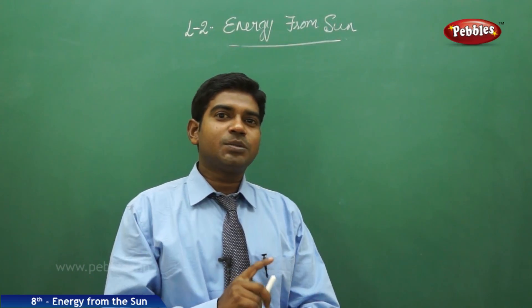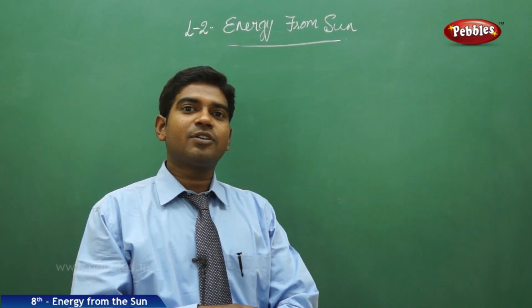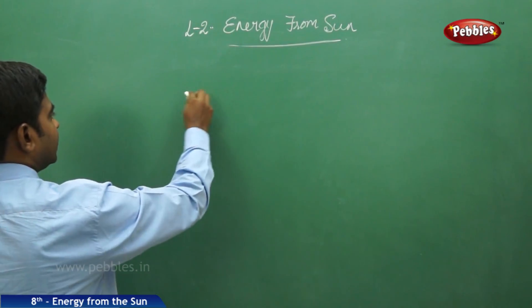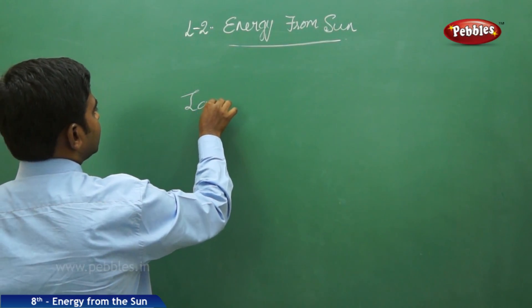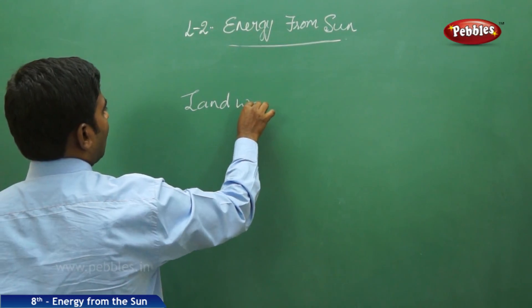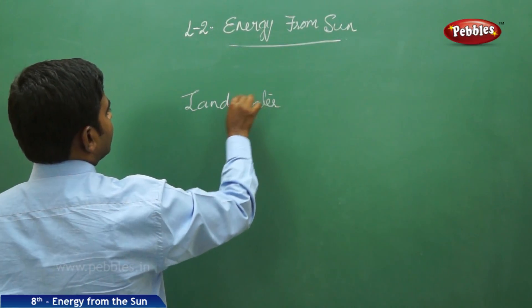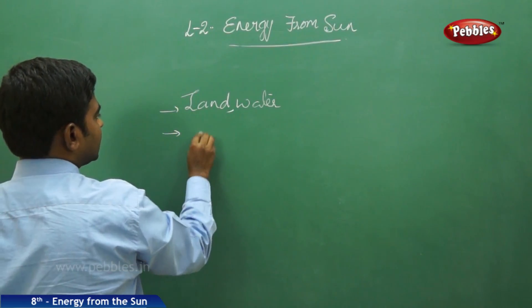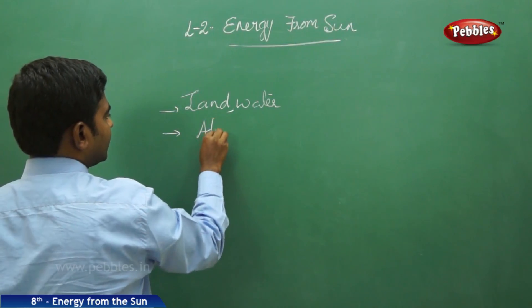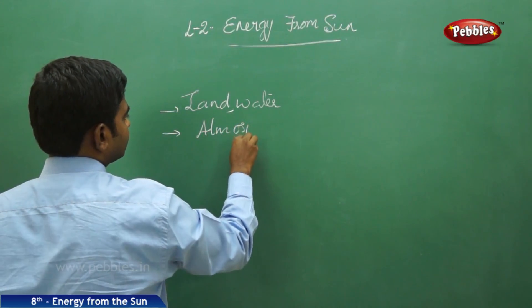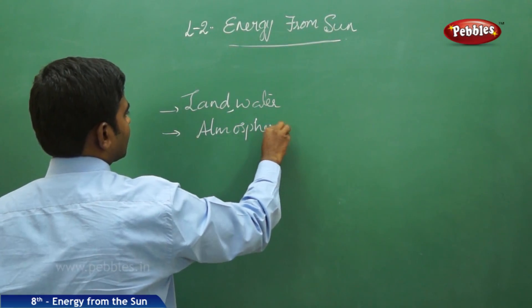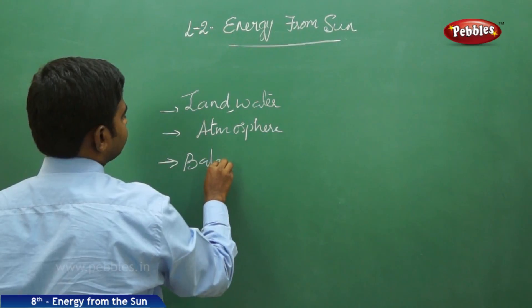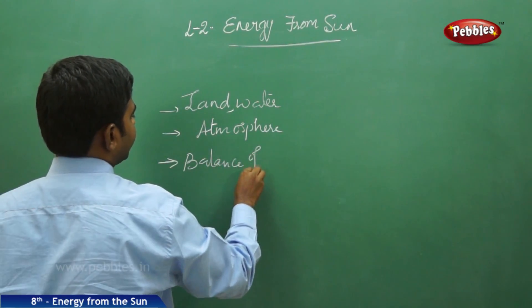How can the concept of heat vary from place to place? In order to understand this, we have to read the concepts in three different parts. One is the land and water — how are they related. The next point is the atmosphere. And the third one is the balance of heat.